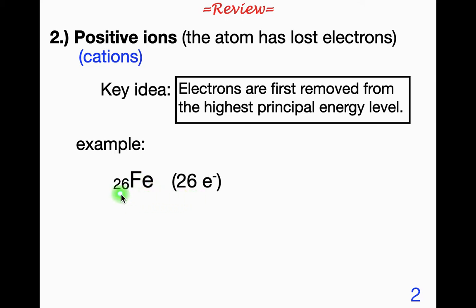For example, iron. Iron is atomic number 26, has 26 electrons, and this would be its electron configuration. Iron with a positive 2 charge has two less electrons, so we're going to need to take away two electrons. But which two electrons? Well you might think it would be the 3d, but the key idea here tells us no.